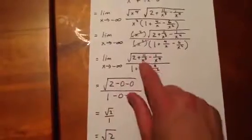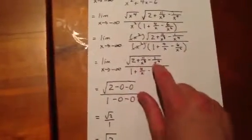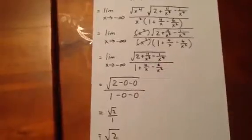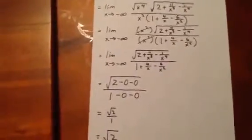Treating each of these limits individually, we see that this quantity will become infinitely close to 0, as will this quantity as x goes to negative infinity.